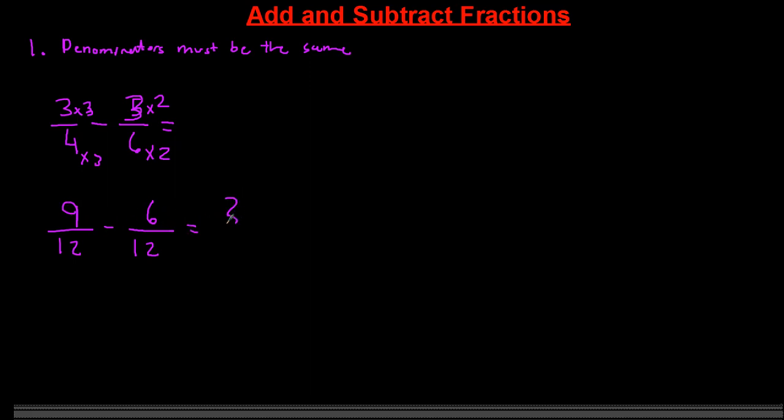So this is going to be 12 and this is going to be 12. Times 3, times 3 is 9. Times 2, times 2 is 6. 9 minus 6 is 3. Denominator has to stay the same. Let's simplify. Divide the top by 3 and the bottom by 3. So 3 divided by 3 is equal to 1, and 12 divided by 3 is equal to 4. So this is equivalent to 1/4.